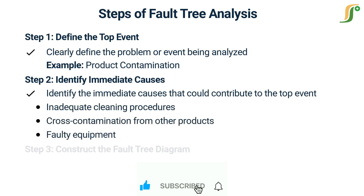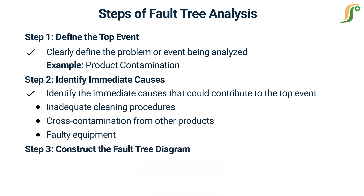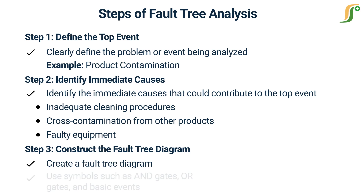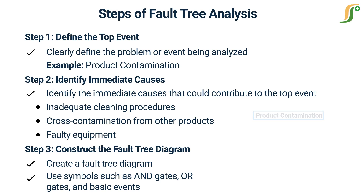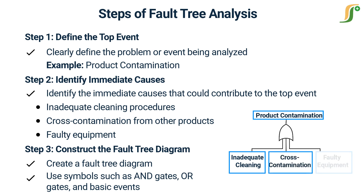In step 3, construct the fault tree diagram. Create a fault tree diagram, a graphical representation of the fault tree. Use symbols such as AND gates, OR gates, and basic events. For our example, the fault tree might have branches representing inadequate cleaning, cross-contamination, and faulty equipment connected to the top event, product contamination.